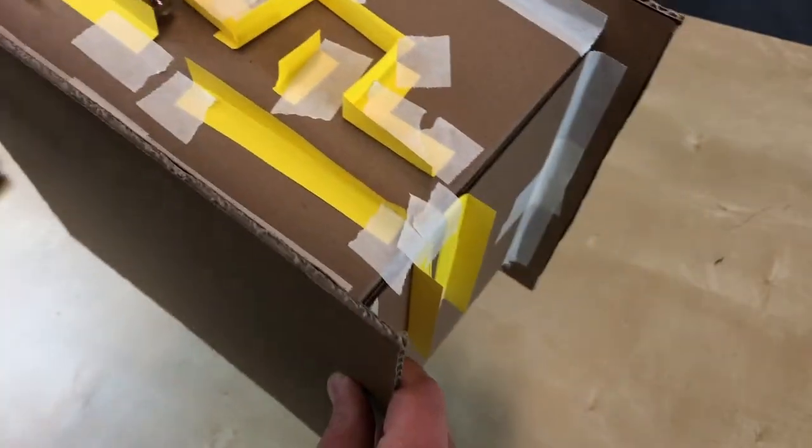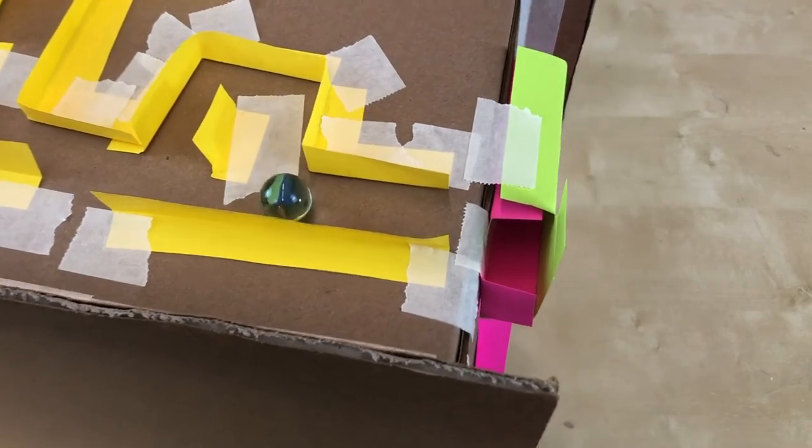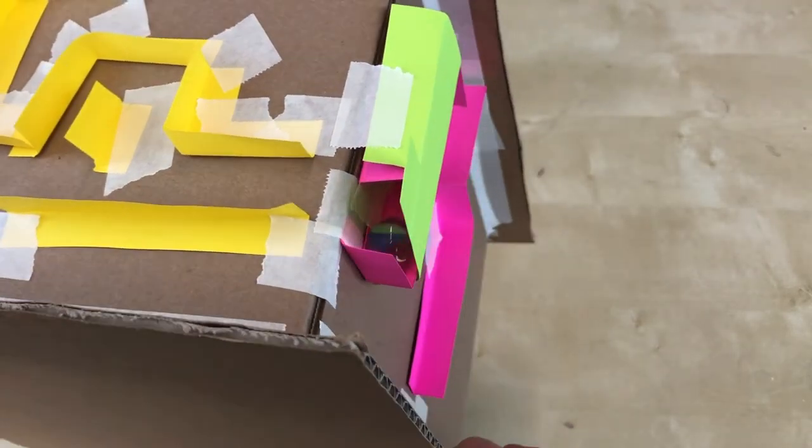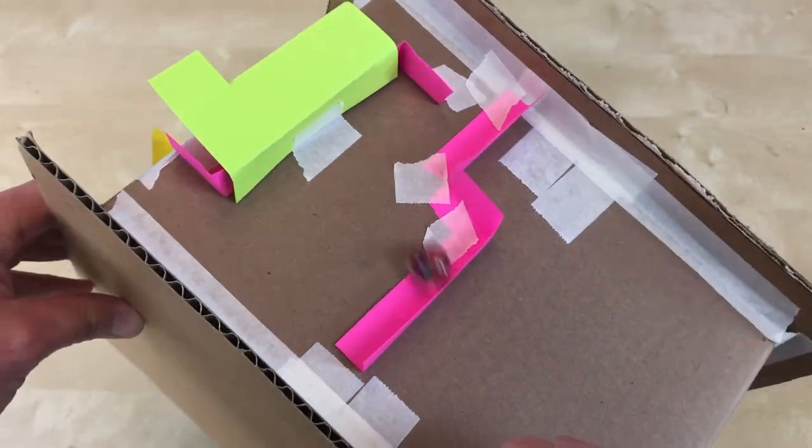It's important to build your labyrinth so that the person playing can progress from one side of the box to the next side of the box without losing their marble. One simple way to create a transition from one side of the box to the next is to create a covered turn.